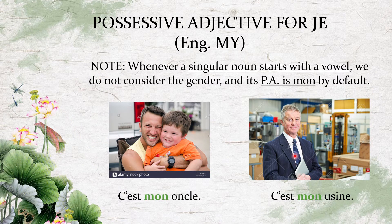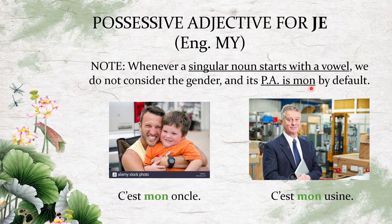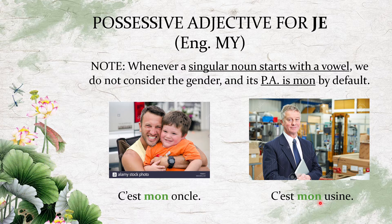There is one important rule: whenever you have a singular noun that starts with a vowel, you do not look at the gender of that noun. The possessive adjective for 'je' with a singular noun starting with a vowel is always 'mon' by default. For example: 'c'est mon oncle' — my uncle — because 'oncle' starts with a vowel and is singular, so we straight away use mon. Similarly, 'c'est mon usine' — my factory — starts with a vowel, so it's mon.